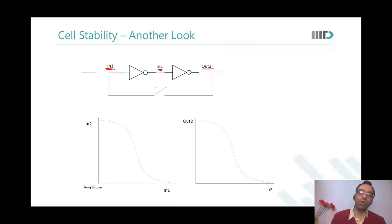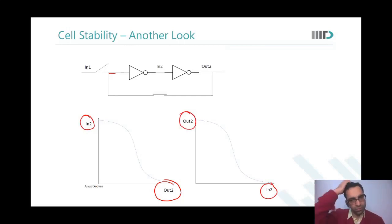What I do is, if I draw their transfer characteristics, the transfer characteristics would appear something like this. Now if I close the switch, what happens? Now my transfer characteristics are like this. What is important to notice is that for the first inverter, the input no longer is in1. The input is now out2. So the first curve is between out2 and in2. The second curve is between in2 and out2.